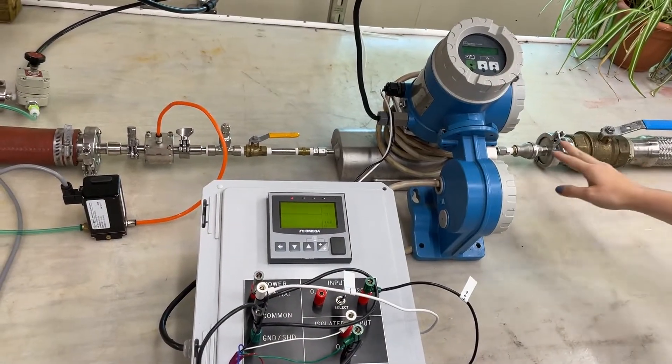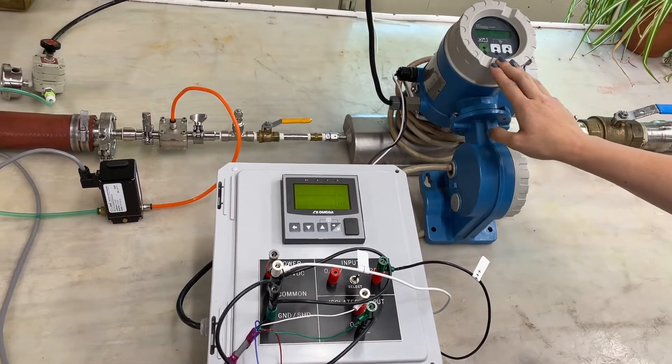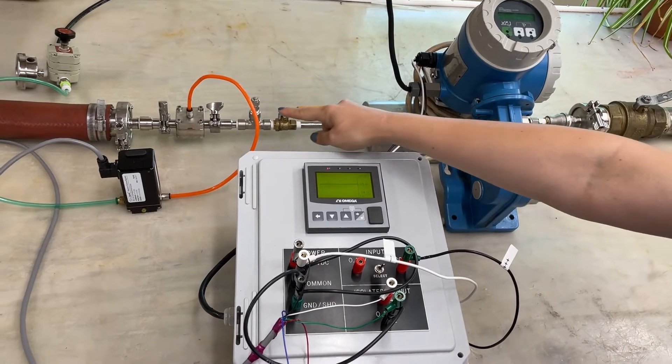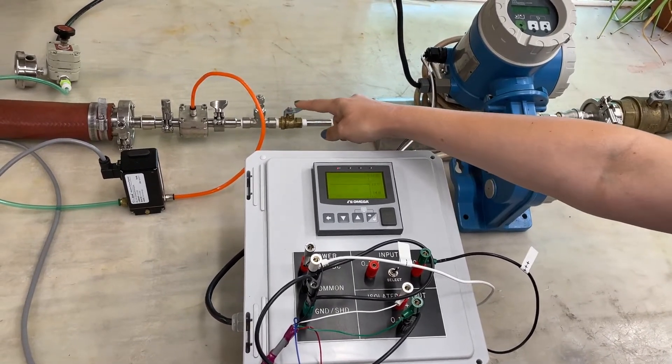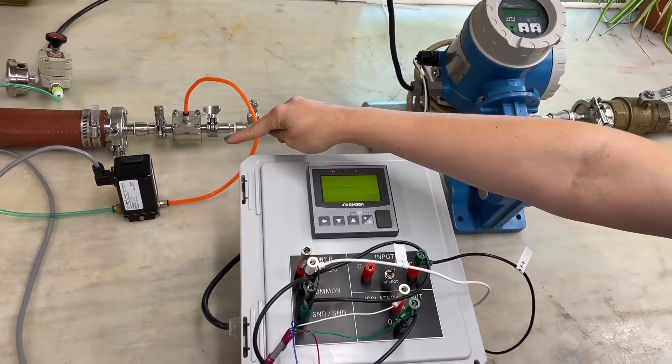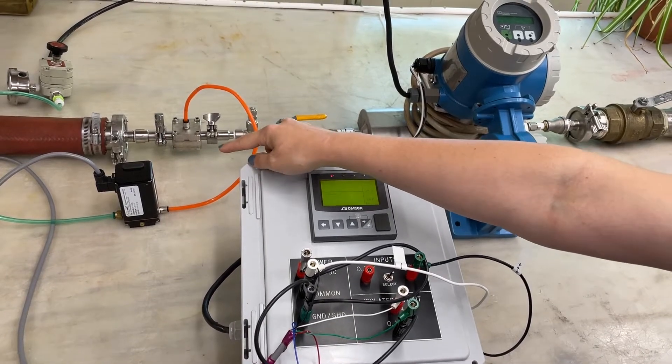Here we have the water coming into our process through our flow meter and then to our Equilibar flow control valve which is piloted by a high resolution QPV electronic pressure regulator.